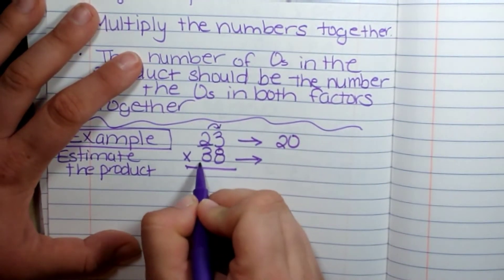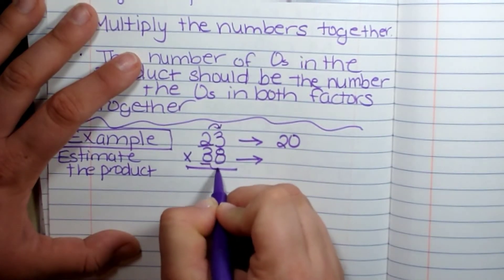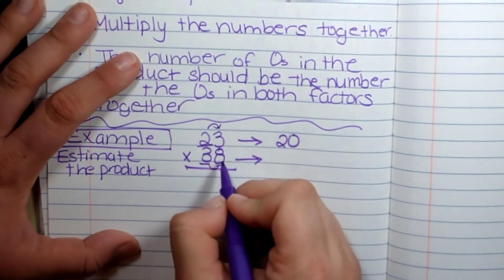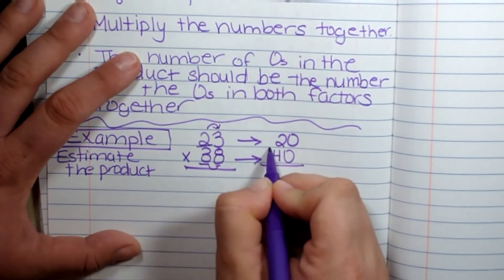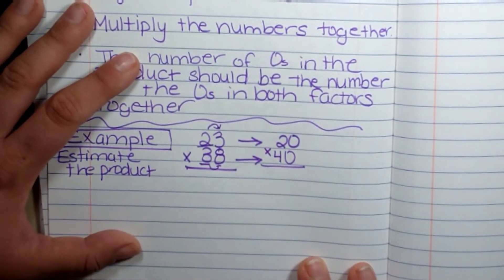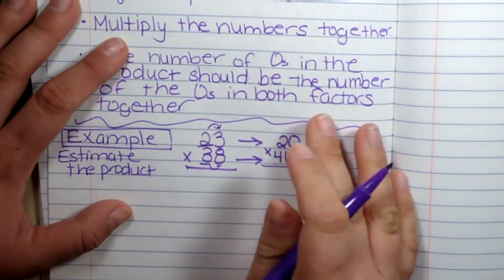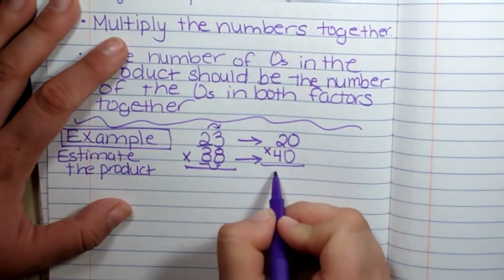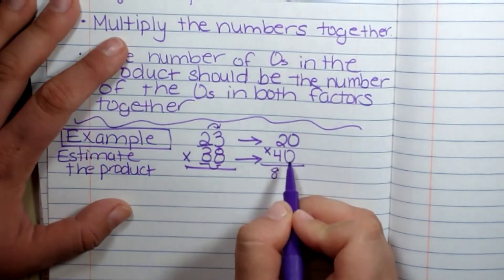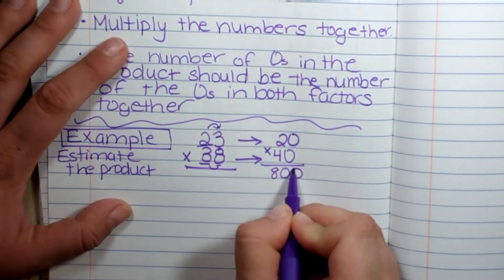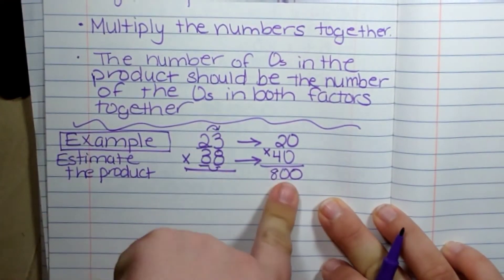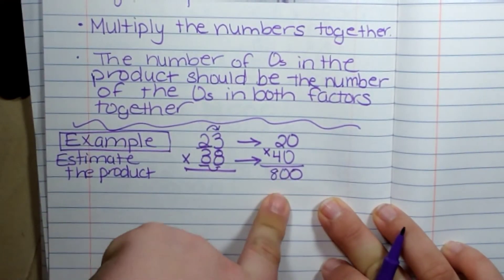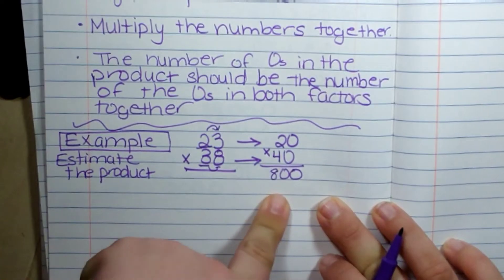Then we're going to do the same to this number. We're going to look next door. Five or more, let it soar. So this is going to become 40. I'm going to multiply—forget the zeros—I'm going to multiply my numbers together. That's eight. How many zeros do I have? I have two. So an estimation of 23 times 38 is 800. The answer is about 800.